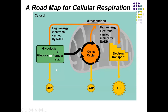This overview figure — not on the test — shows how it all works. In glycolysis, outside the mitochondria, you go from glucose to pyruvic acid making a little ATP. Keep your eye on high-energy electrons carried by NADH. That orange line goes all the way to electron transport (ETS). Krebs cycle is inside the mitochondria, also feeding into ETS via NADH. Electron transport is where a whole bunch of ATP is made.